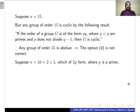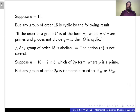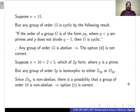Suppose N = 10, which equals 2 × 5, which is of the form 2P where P is prime. Any group of order 2P is isomorphic to either Z₂P or D₂P. Since D₂P is non-abelian, there is a possibility that a group of order 10 is non-abelian. Therefore, option C is the correct option.